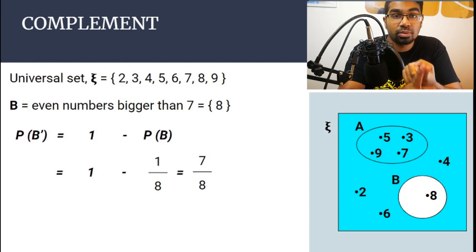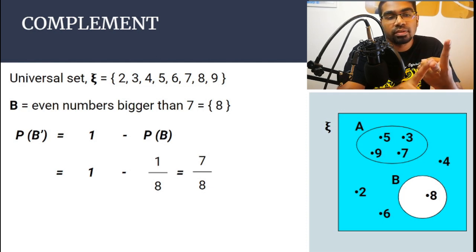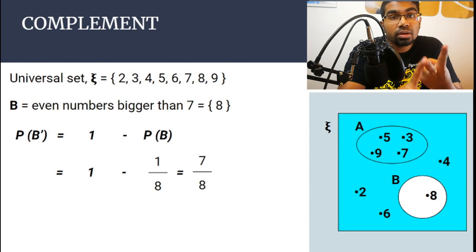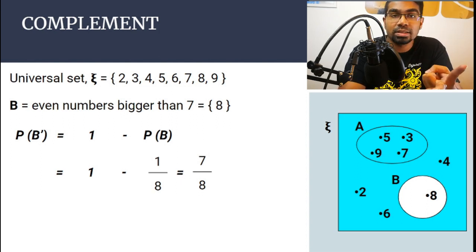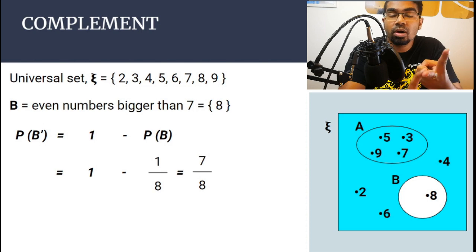Two things to remember: the sum of all probabilities of the outcomes must equal one, and from that we derive that the probability of the complement of an event is one minus the probability of the event itself. That's it for this video — if you've learned something, please hit the like button and subscribe. See you in the next video.